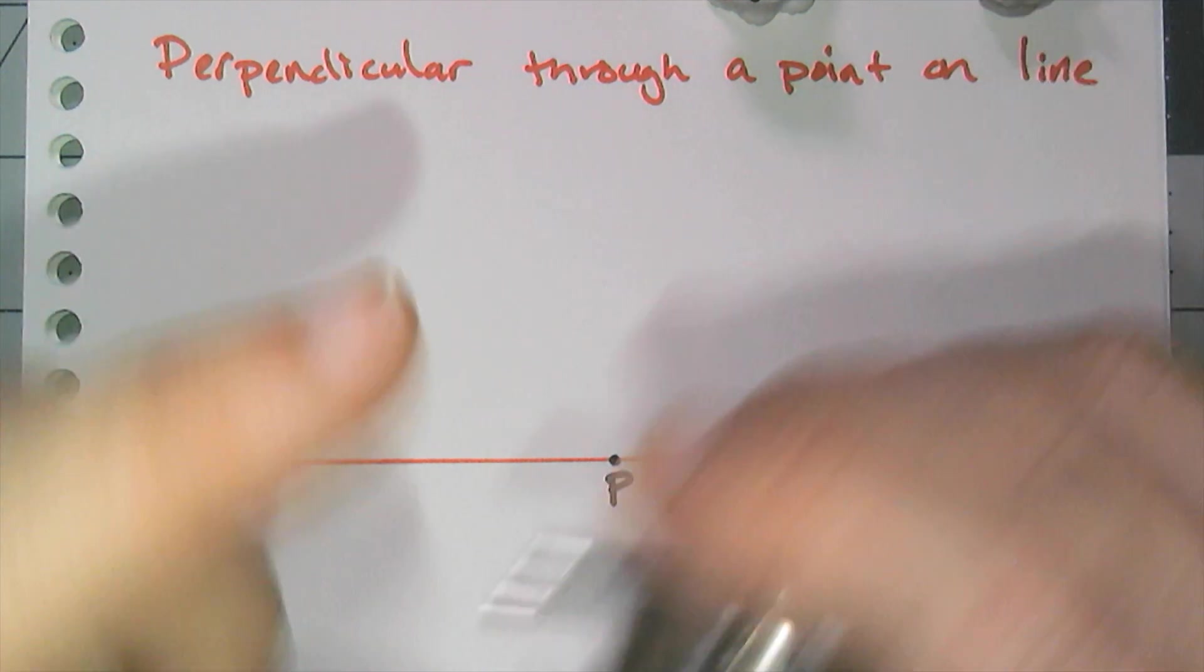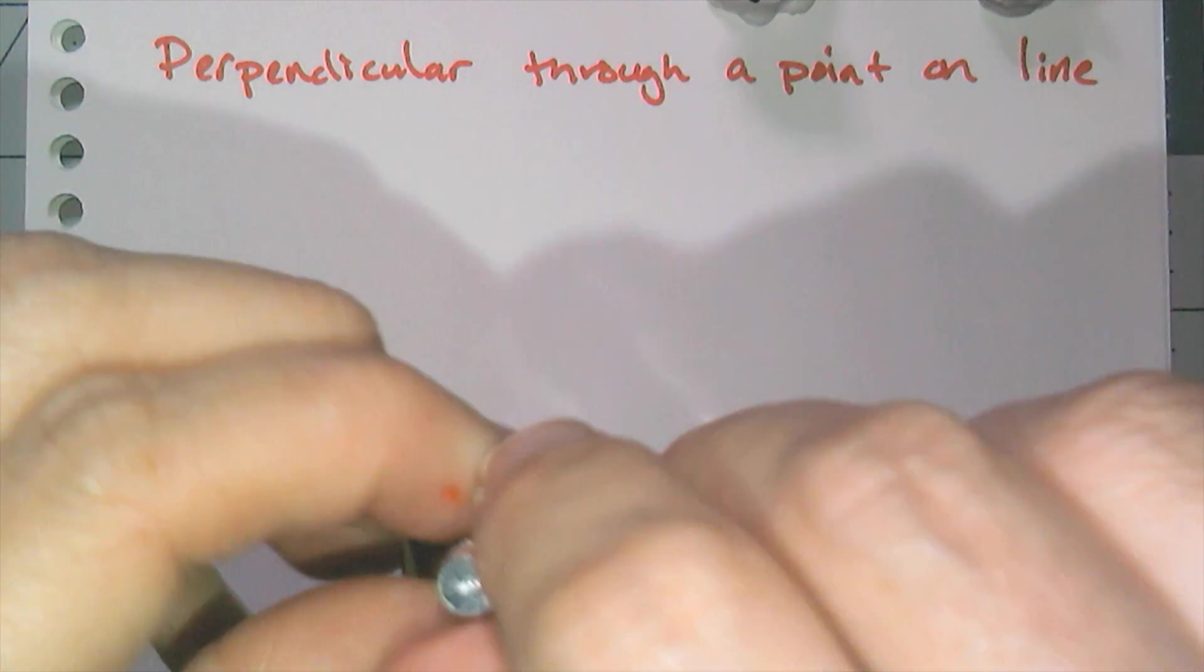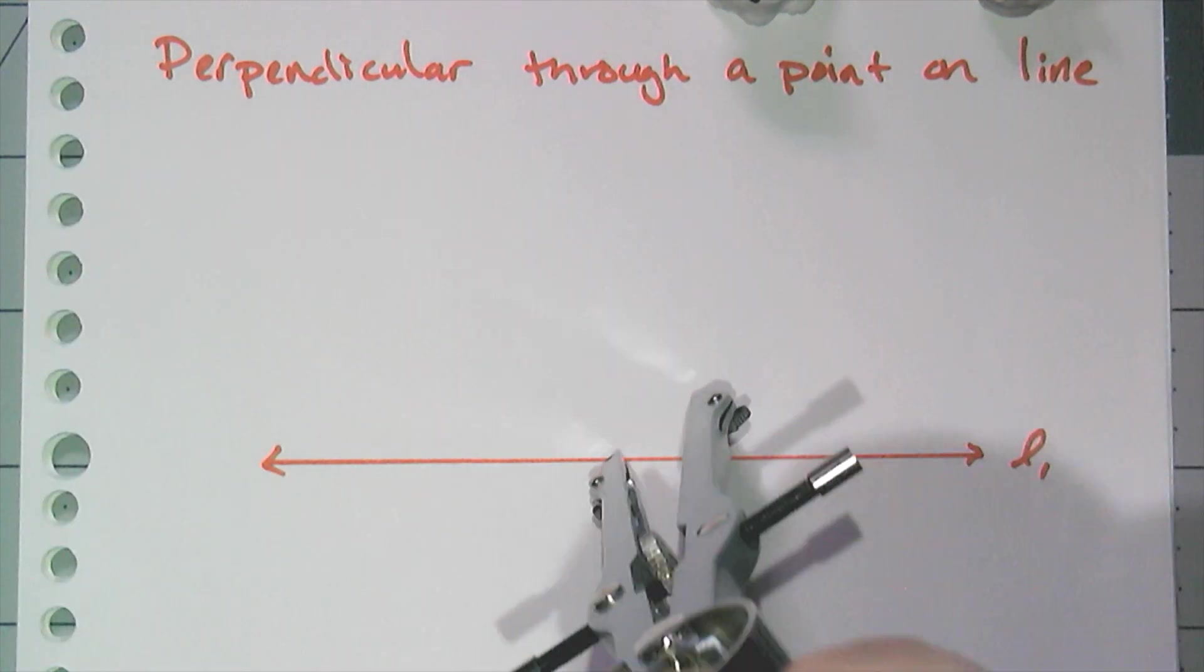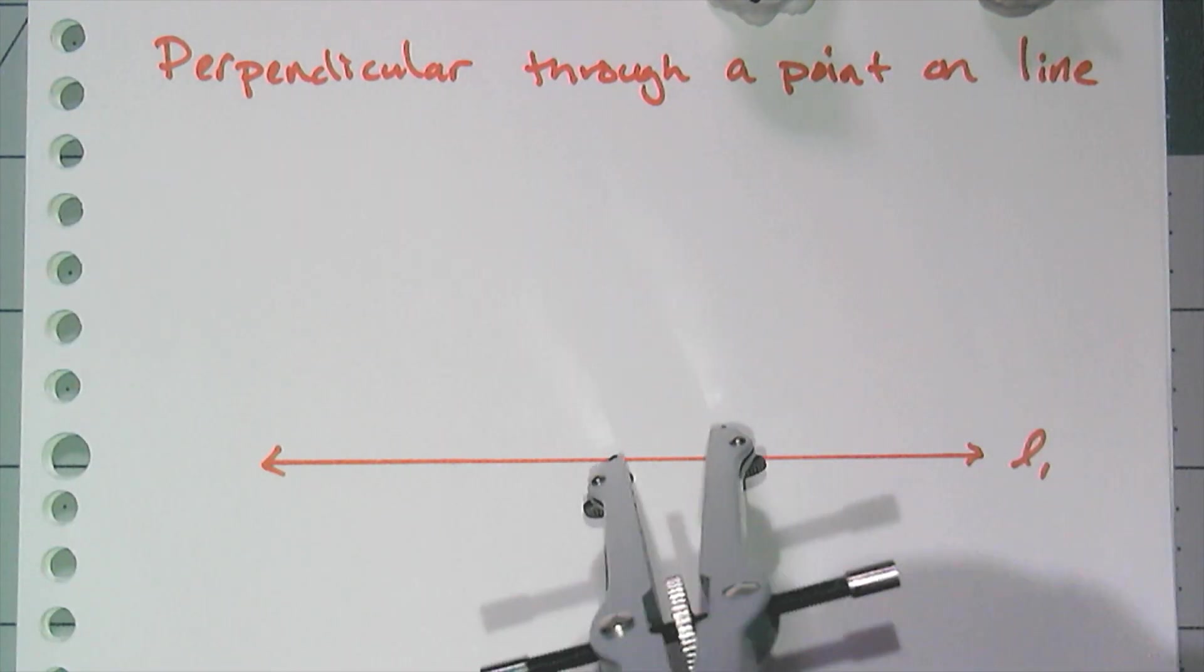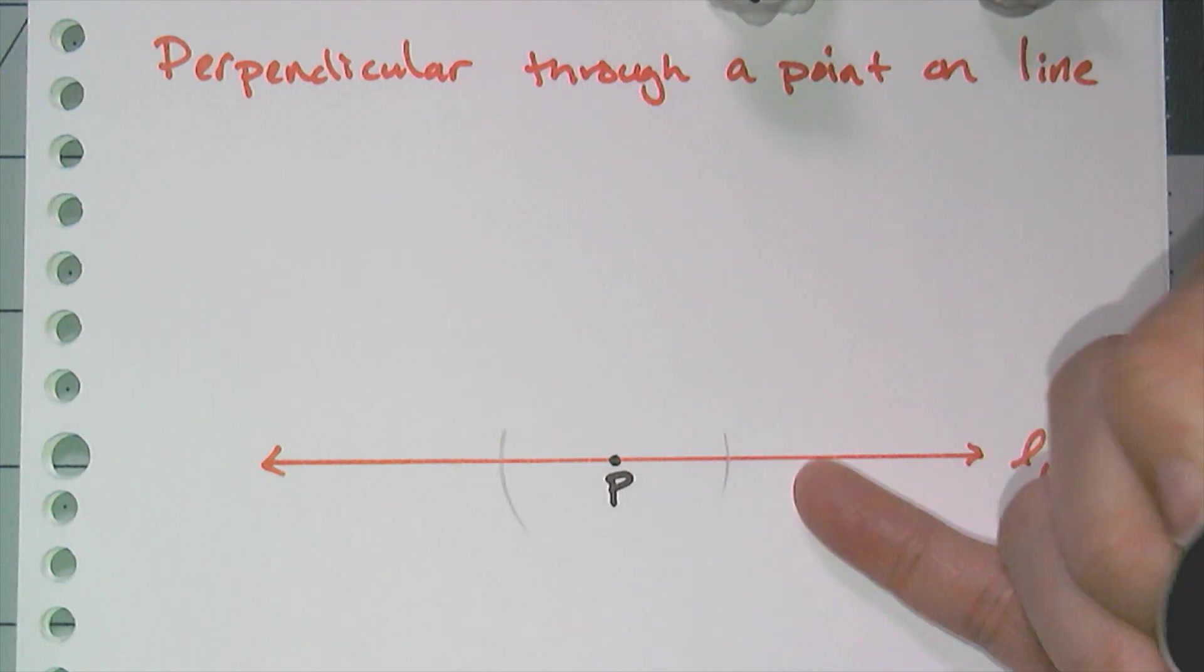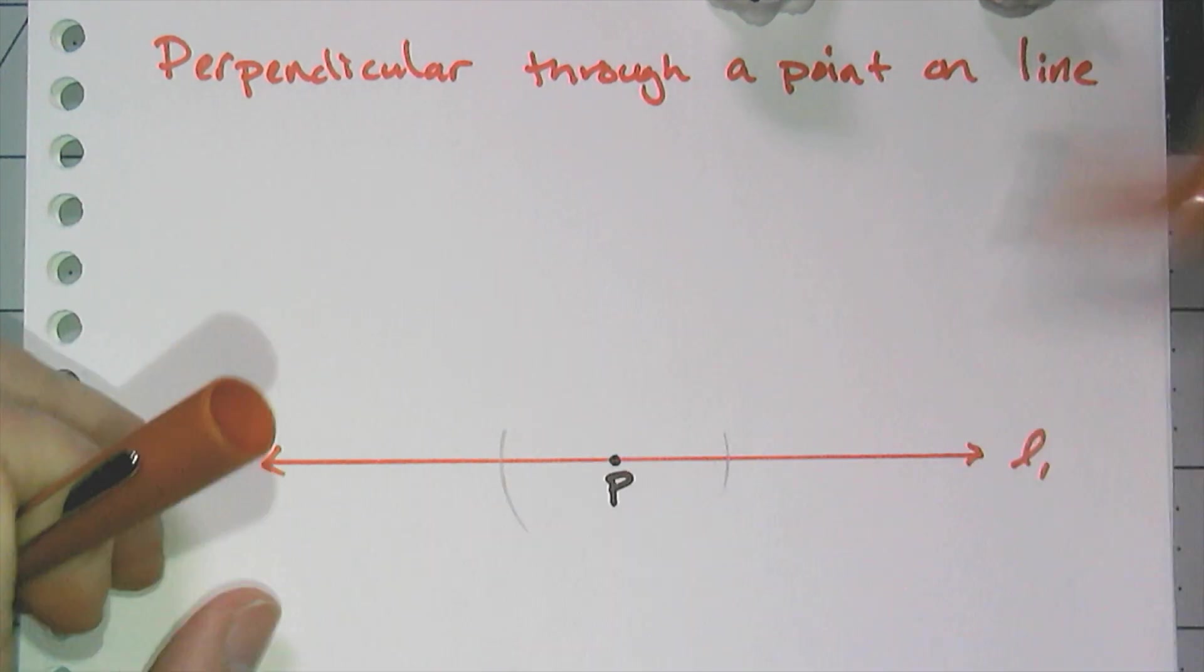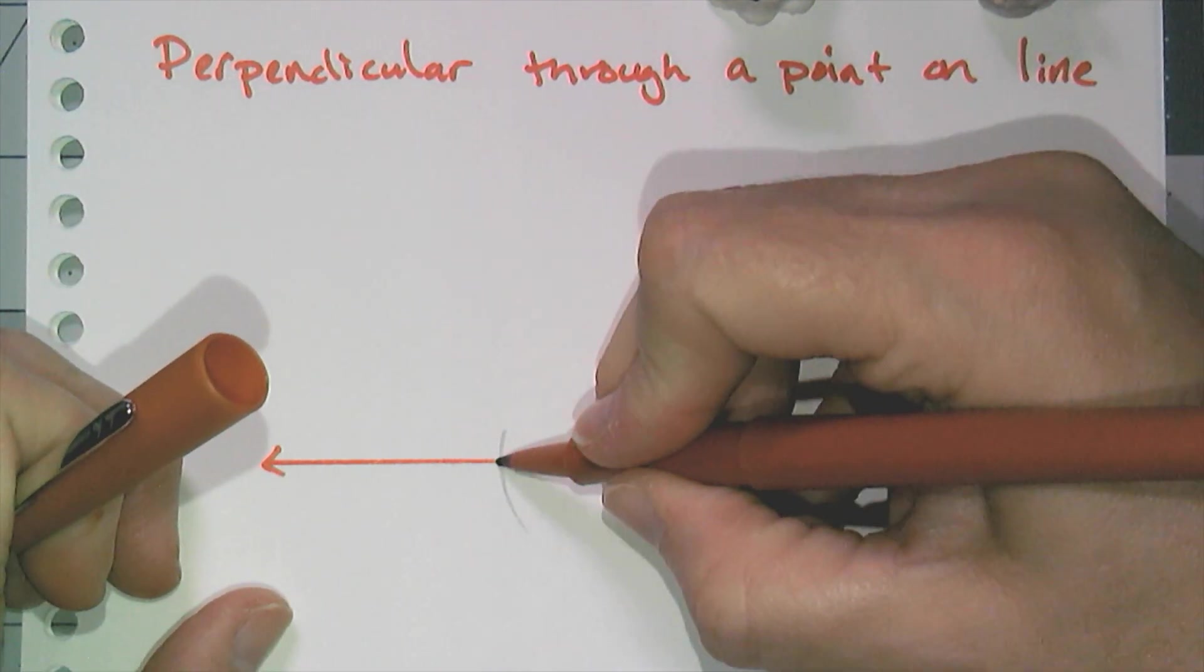Alright, so I put my compass point on the point on the line, and then I choose some radius and I mark two points on the line that are equidistant from that point.